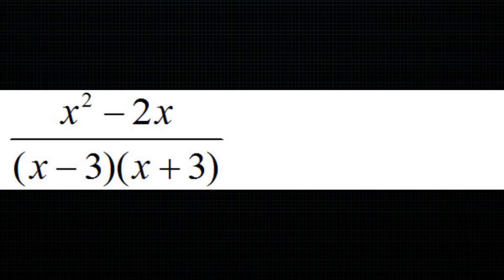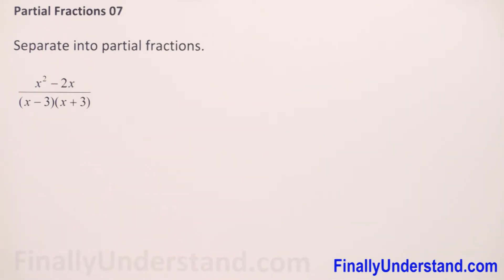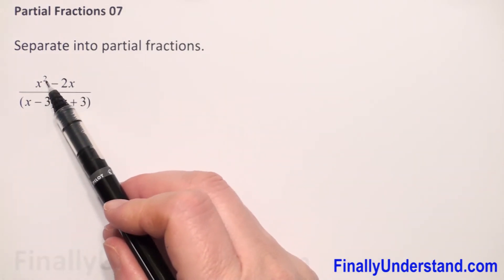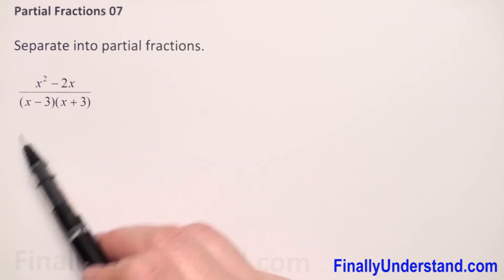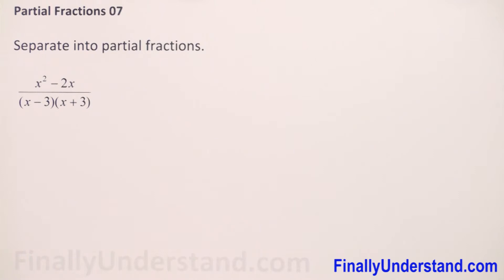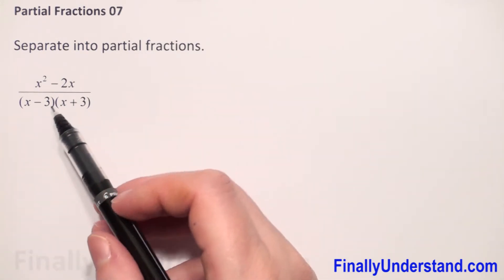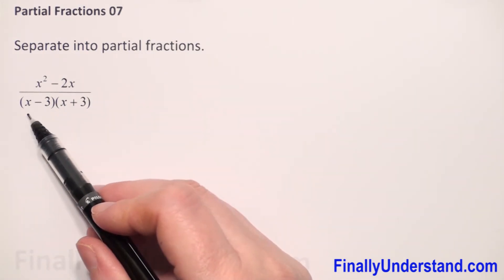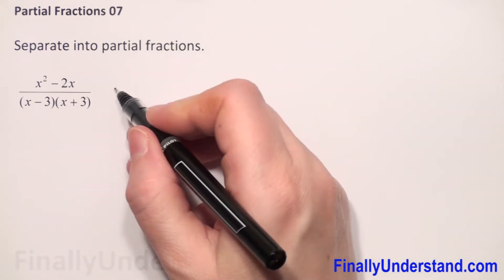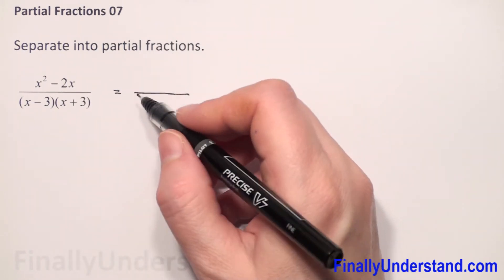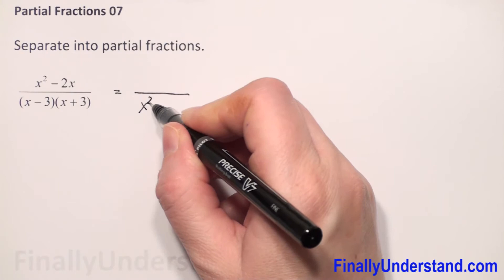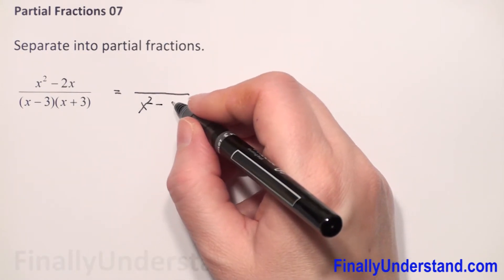We have to rewrite our original fraction to partial fractions. First we need to check the power of numerator and denominator. We have x squared in the numerator, and when I multiply x times x, I will have x squared in the denominator also. So first we need to do long division. To do this we have to multiply x minus 3 times x plus 3. We have here difference of two perfect squares, so this is equal x squared minus 9.